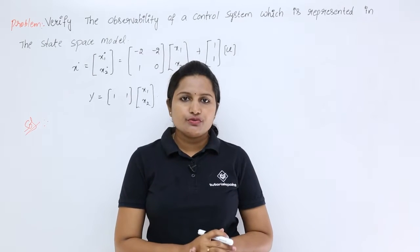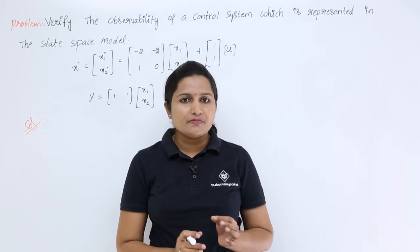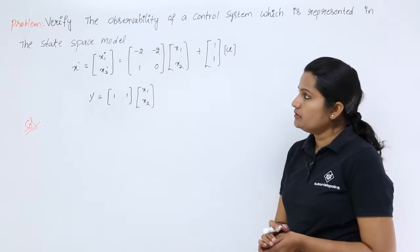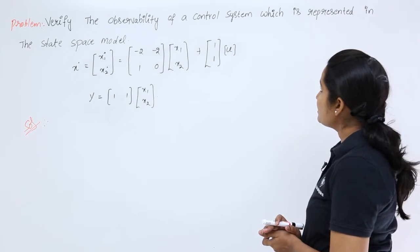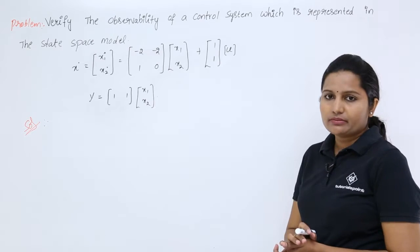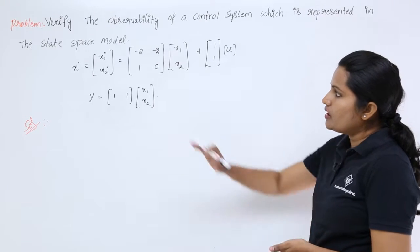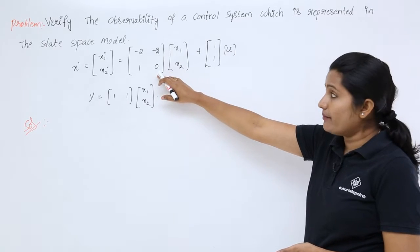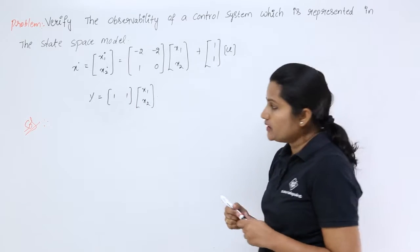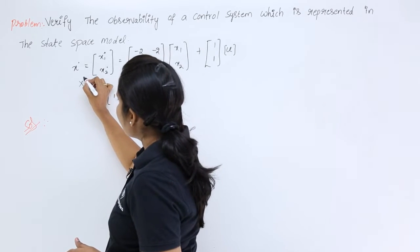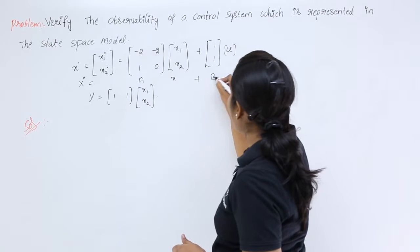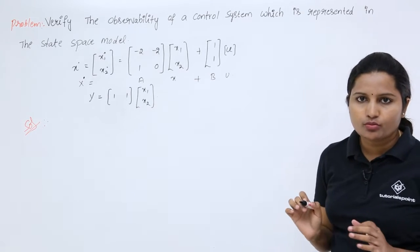In this video we are going to solve a problem related to observability of a control system. The problem is to verify the observability of a control system represented in the state space model: x-dot equals A matrix (minus 2, minus 2; 1, 0) plus B·u, where B matrix is (1; 1). This is represented as x-dot = A·x + B·u, comparing with the standard state model.